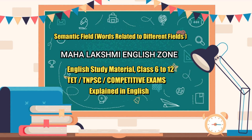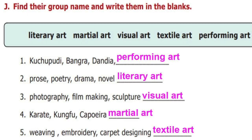In this video we are going to see words and vocabularies related to different fields. The words related to different arts are given, and questions may be asked in competitive exams. First we shall see kuchipudi, bhangra, and dandiya — these are varieties of dances, so we say they are performing art.